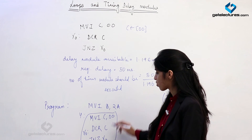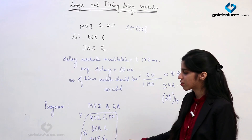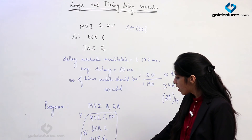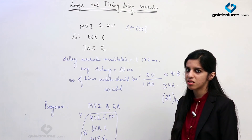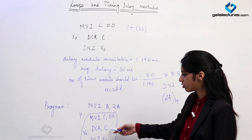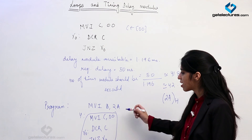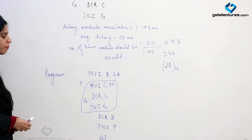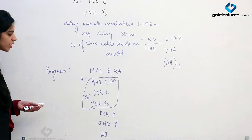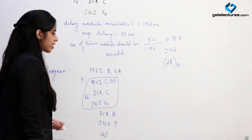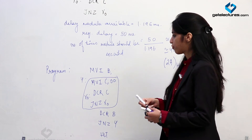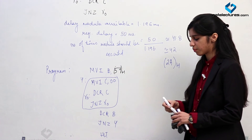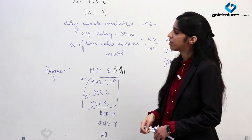The T-states for the outer loop instructions (MVI B, DCR B, JNZ) are negligible compared to the total number of T-states, since the inner module already produces 1.196 milliseconds. So you can just focus on the timing module producing 1.196 milliseconds and calculate how many times it needs to run for the required delay. For your practice, try to write a program to produce a delay of 100 milliseconds - the count would become approximately 84 (54H). This is all about loops and timing delay modules.